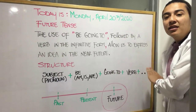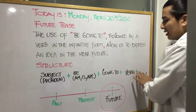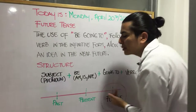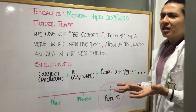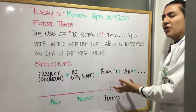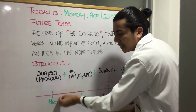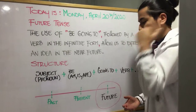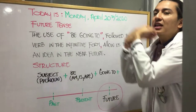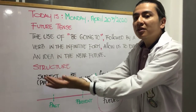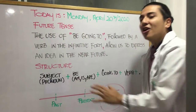Then we add going to, followed by the verb in the infinitive — meaning the present form. Here we have a timeline: on the left is the past, in the middle is the present — what we have right now — and on the right is the future, which represents the actions we're going to use in the future. That's exactly how it works.